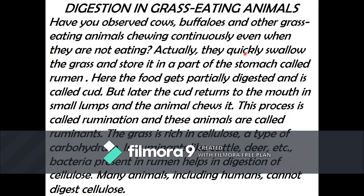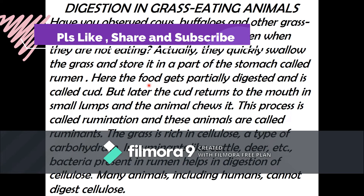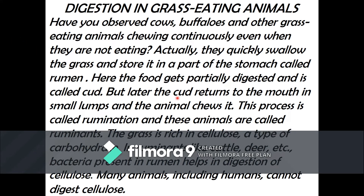These animals quickly swallow the grass and store it in a part of the stomach called the rumen. Here the food gets partially digested and it is called cud. Later, the cud returns to the mouth in small lumps and the animals chew it. This process is called rumination and these animals are called ruminants.